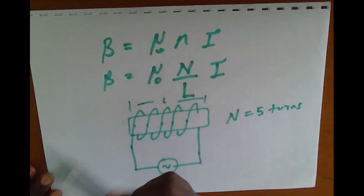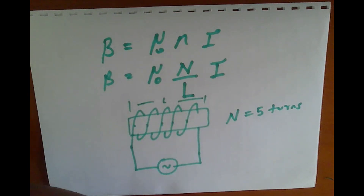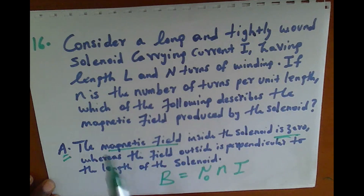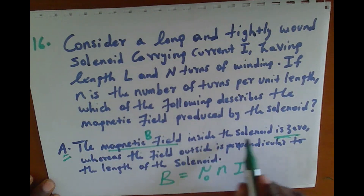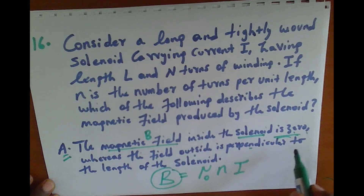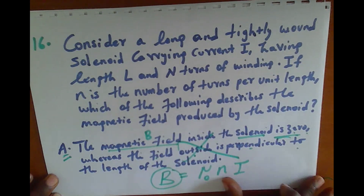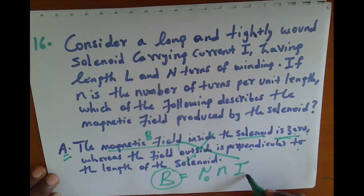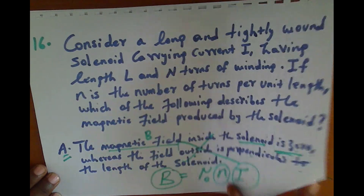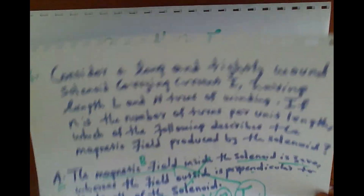So for option A, the magnetic field inside the solenoid is not zero. The field outside is perpendicular to the length of the solenoid, but option A is wrong because given the current and number of turns, B is a constant and therefore cannot be zero.